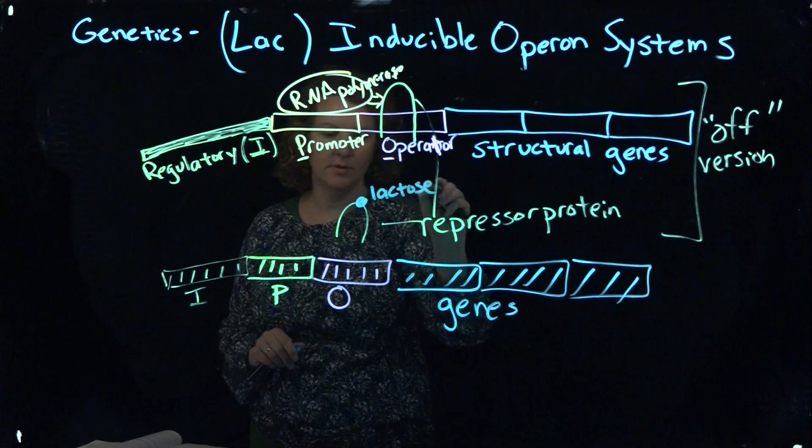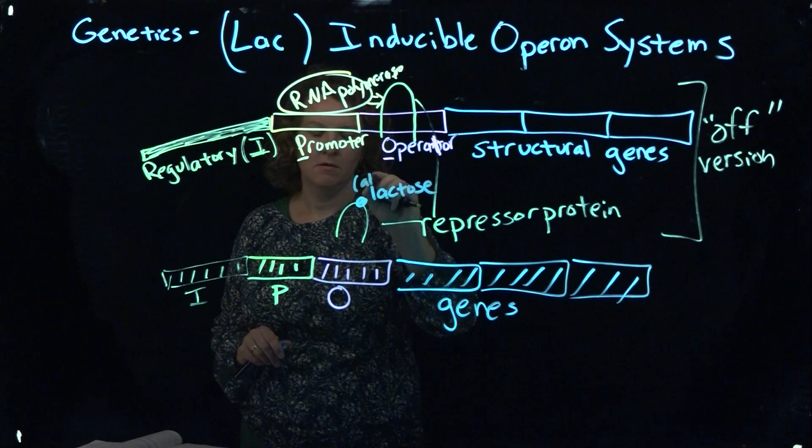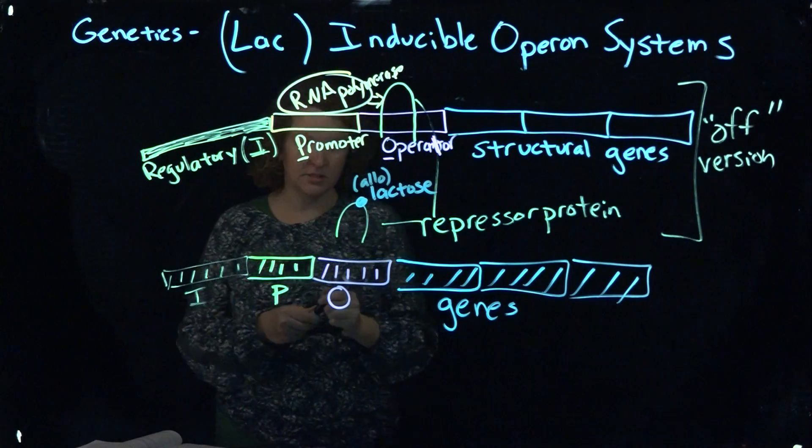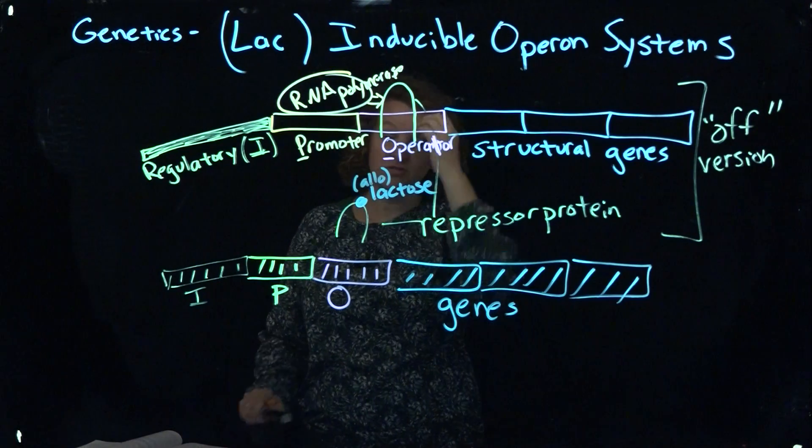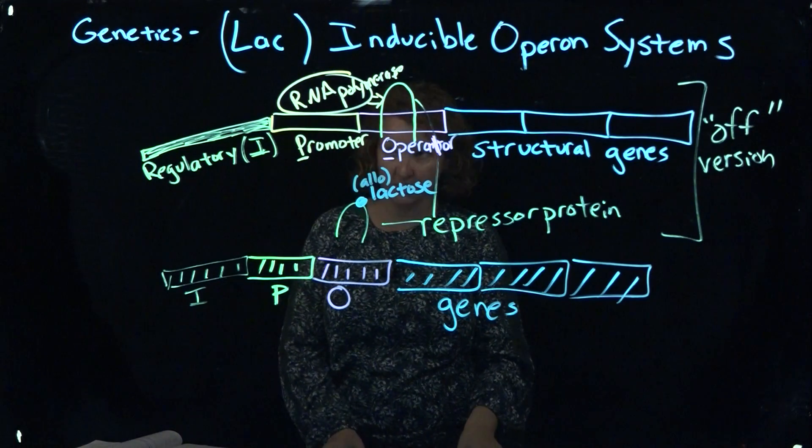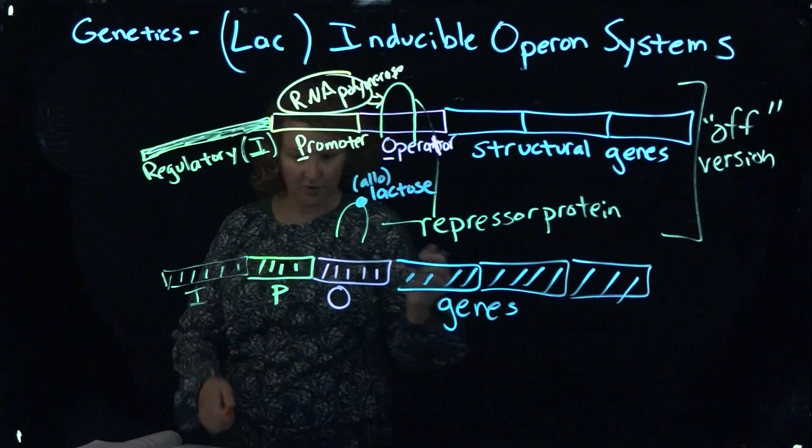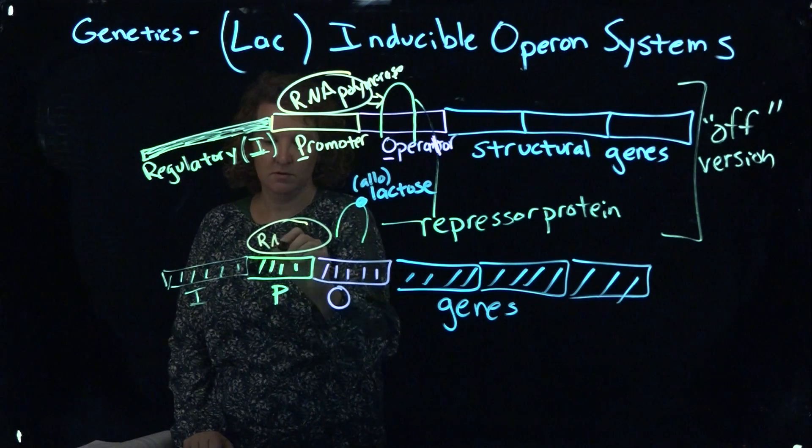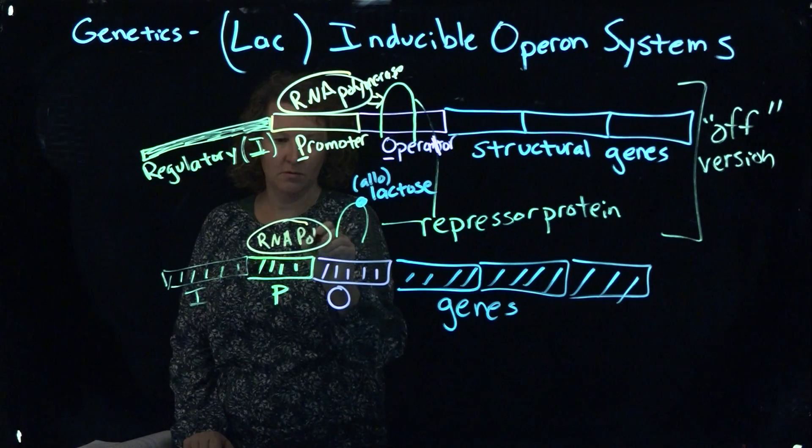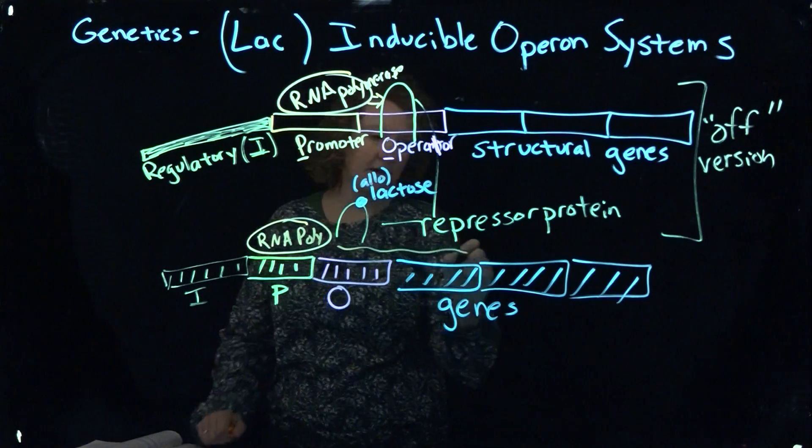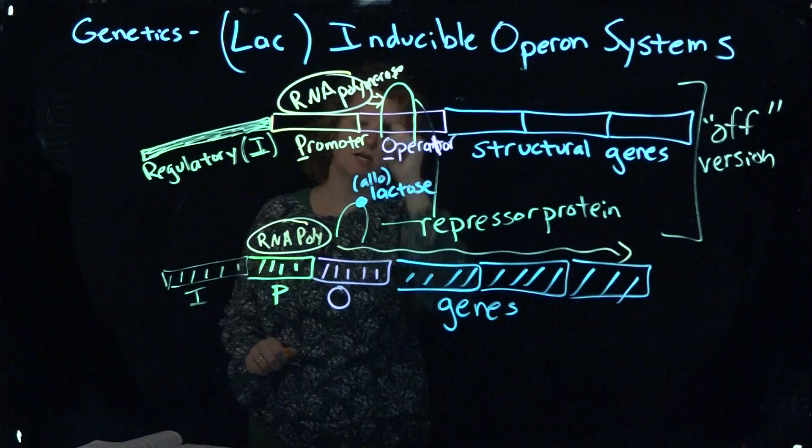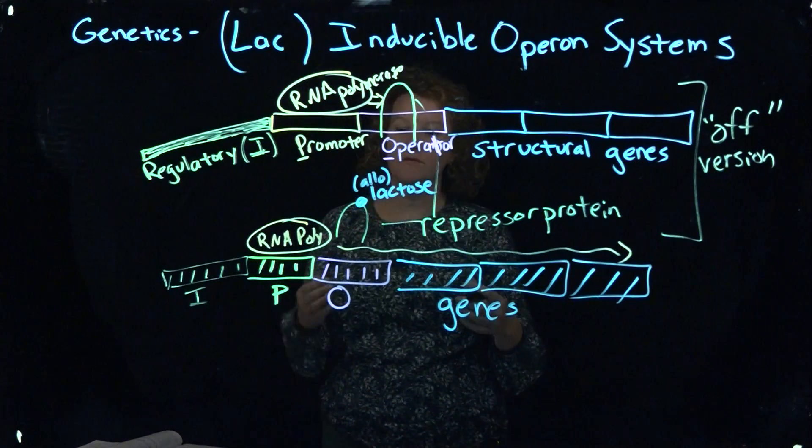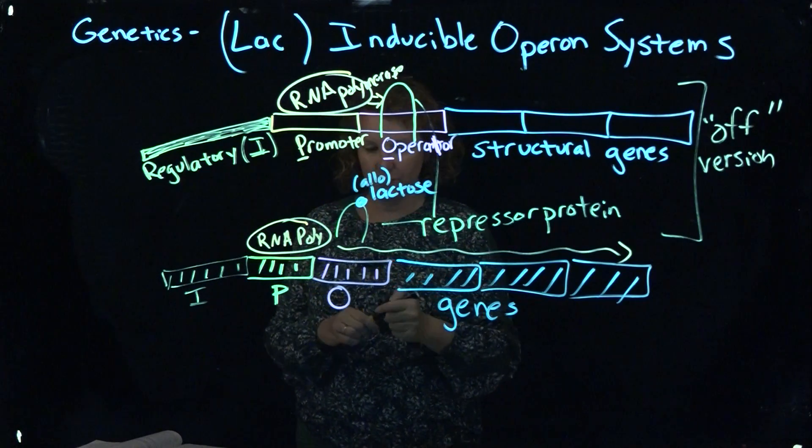So bear with me for looking at all those details. And it will cause the repressor to come off of the operon system. So now when RNA polymerase arrives, it's able to move on down. There's nothing blocking it anymore. So there's actually a conformational change depending on whether lactose is present or not.